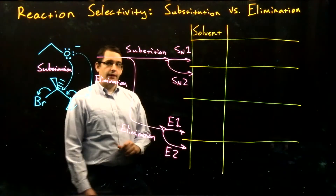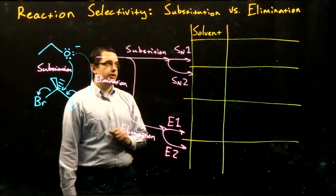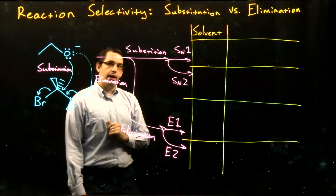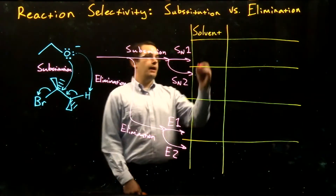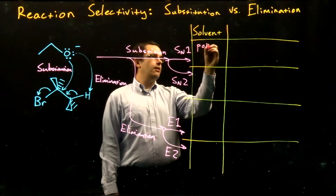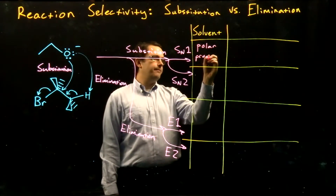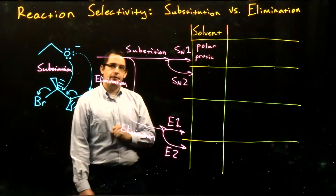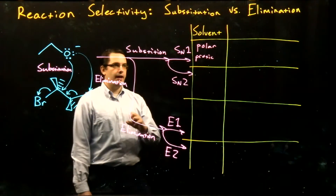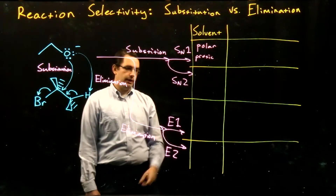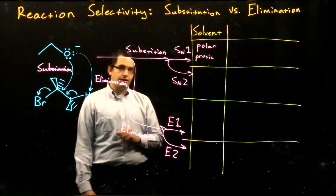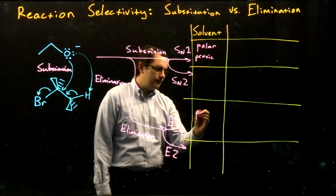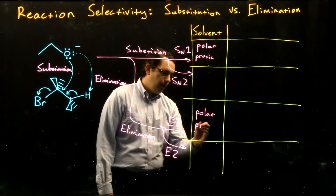The first factor we'll look at for choosing between our menu of reactions is the solvent that we're using. We've looked at this previously, specifically for SN1 and SN2 reactions. Our SN1 reactions preferred polar protic solvents — these tend to be highly polar and are able to interact with our carbocation, helping to stabilize it and allowing our SN1 reaction to proceed more quickly. Our E1 reaction has a similar carbocation intermediate, so we might expect that polar protic solvents are also useful for our E1 reaction.